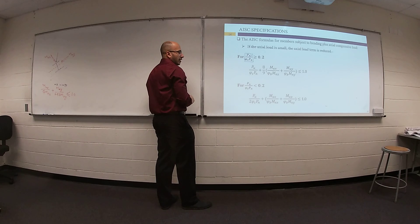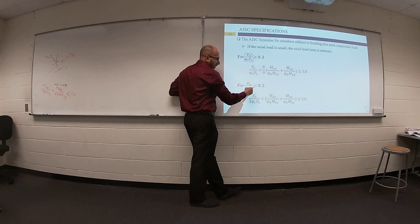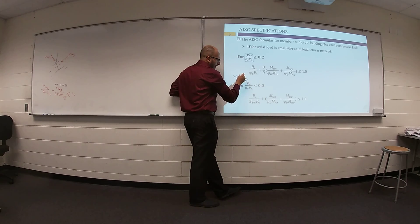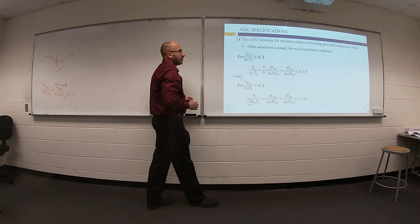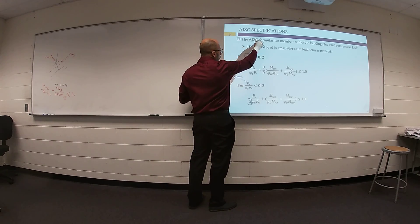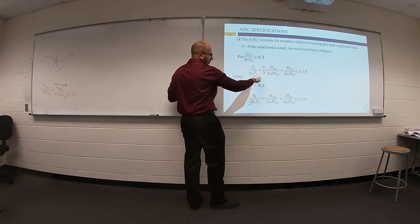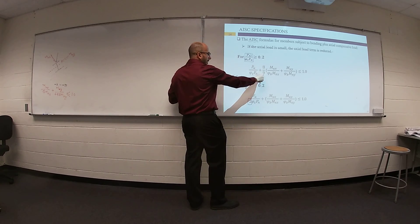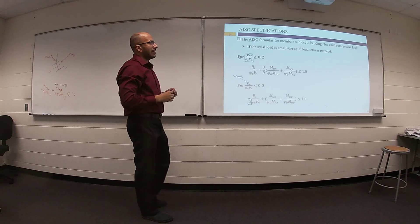P-ultimate divided by your design compressive strength greater than 0.2 means we have a large P-ultimate. If P-ultimate divided by your design compressive strength is smaller than 0.2, that means we have a small value of axial force — then add 2 to this term. This is the standard AISC interaction equation with modifications of 2 and 8/9 based on the value of your axial force.